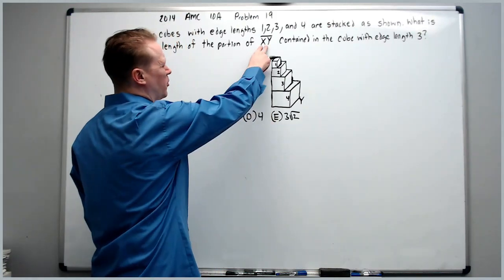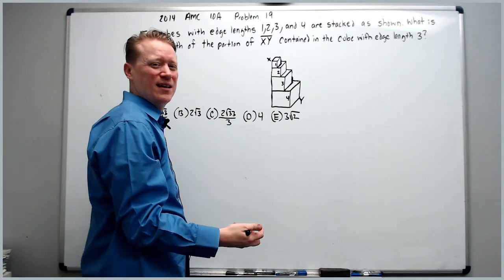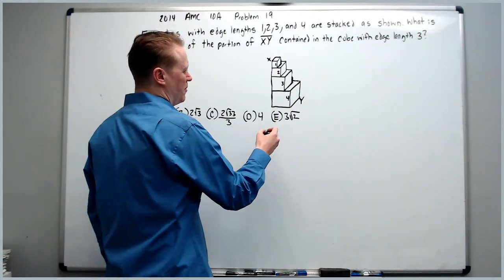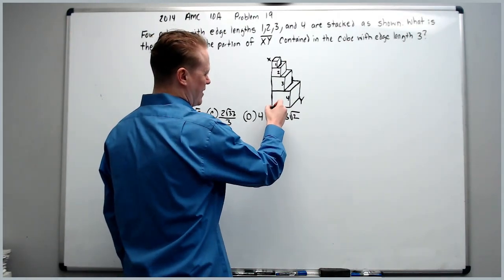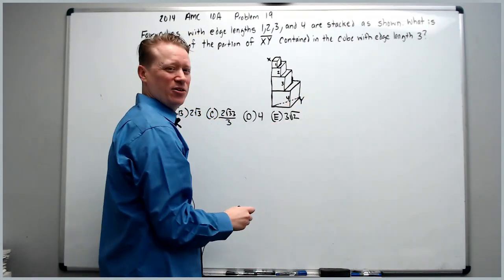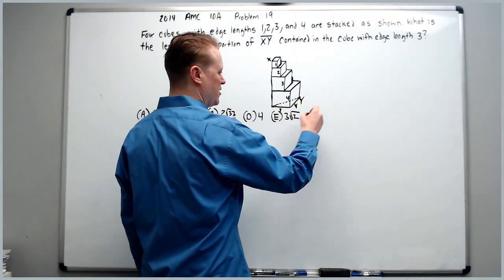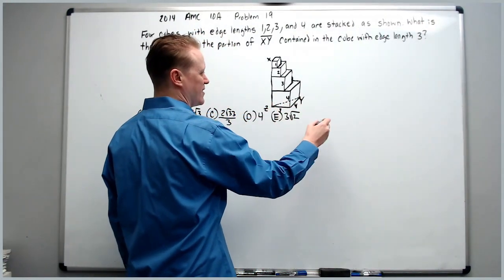Alright, so if it wants the portion of XY's length, then we should probably find XY's length. Let's start with that. If I connect from here over to Y, this will be the diagonal of a face of the cube which would be 4 by 4, so it's going to be 4 root 2. We'll call this Z.